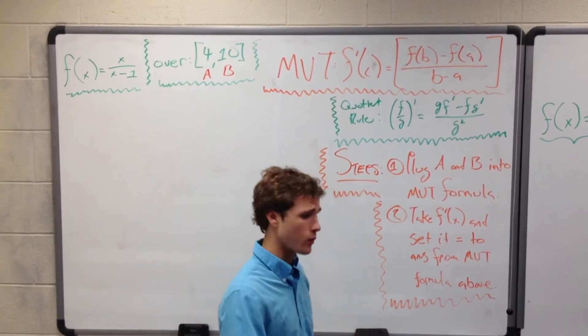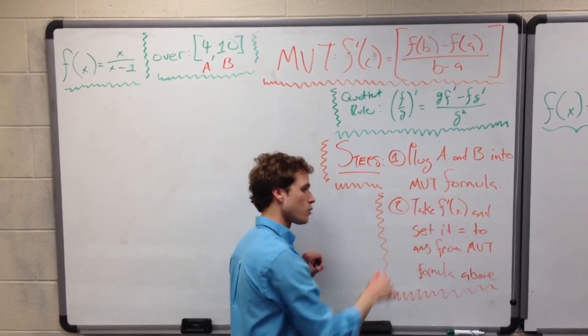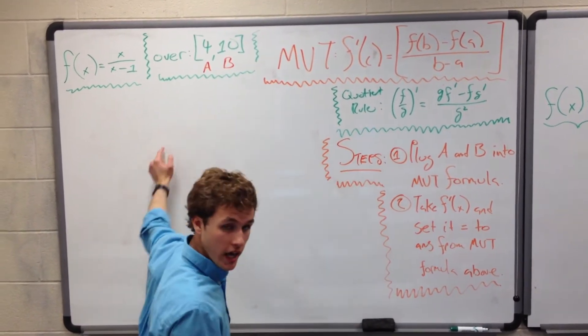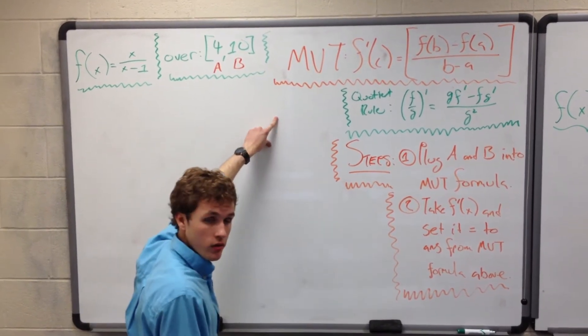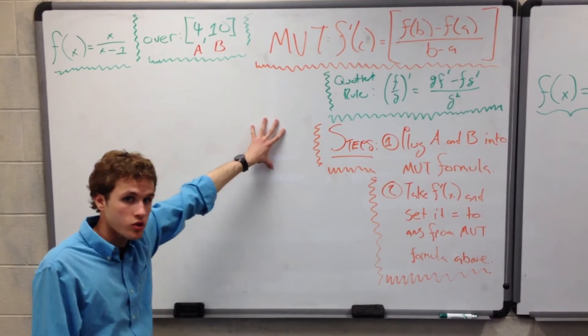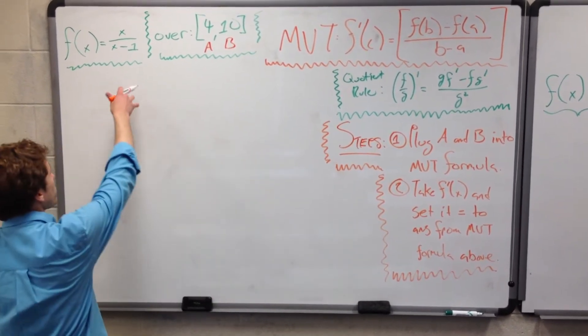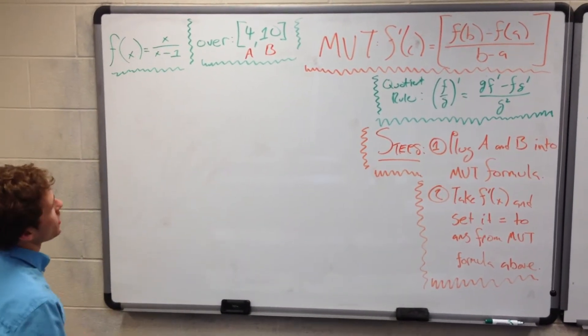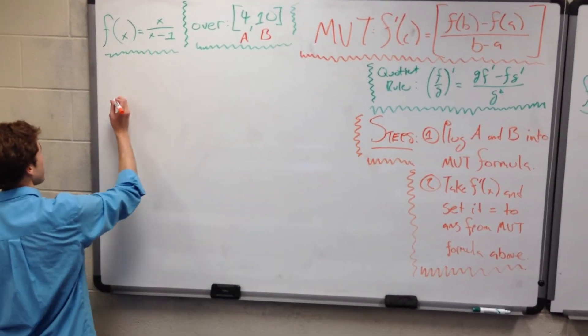The second thing we do is we then take f prime of x, and we set it equal to the answer that we got from using the mean value theorem on f of x. So f of x, put it into the mean value theorem, gives us a value, we set that value equal to the derivative of the original equation. So our original equation is f of x equals x over x minus 1. Let's go ahead and plug things into the mean value theorem for this equation.